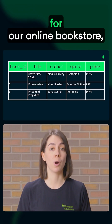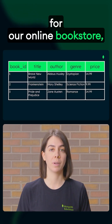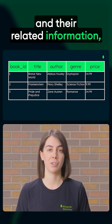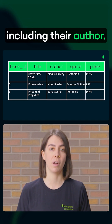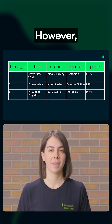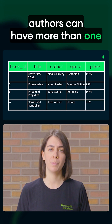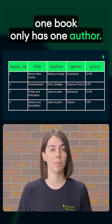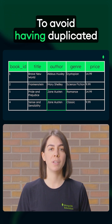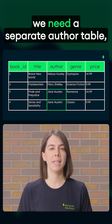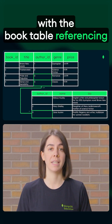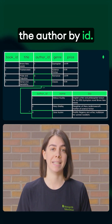To model the book's metadata for our online bookstore, we would need a table for books and their related information, including their author. However, authors can have more than one book, and in our example, one book only has one author. To avoid having duplicated data in our table, we need a separate author table with the book table referencing the author by ID.